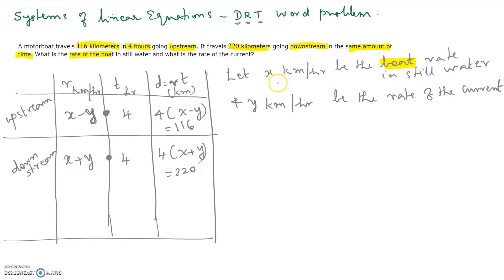Here we assume x is the rate of the boat in still water — that's what the question is asking us — and y is the rate of the current. So x kilometers per hour is the boat rate and y kilometers per hour is the current rate. For upstream you subtract the two rates, giving x minus y, and for downstream you add the two variables because one is favorable to the other, giving x plus y.